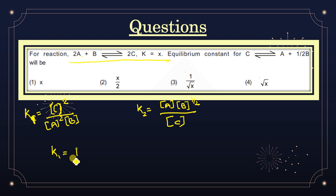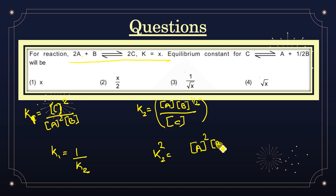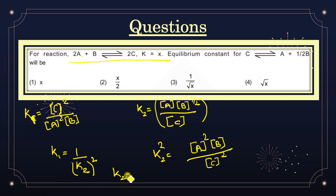Comparing K1 and K2: K1 is the reverse of K2 squared — because the reactants of one equation are the products of the other. If we square K2, we get K2² = [A]²·[B] / [C]² = 1/K1. So K1 = 1/K2², meaning K2 = 1/√K1 = 1/√x. The correct answer is 1/√x.